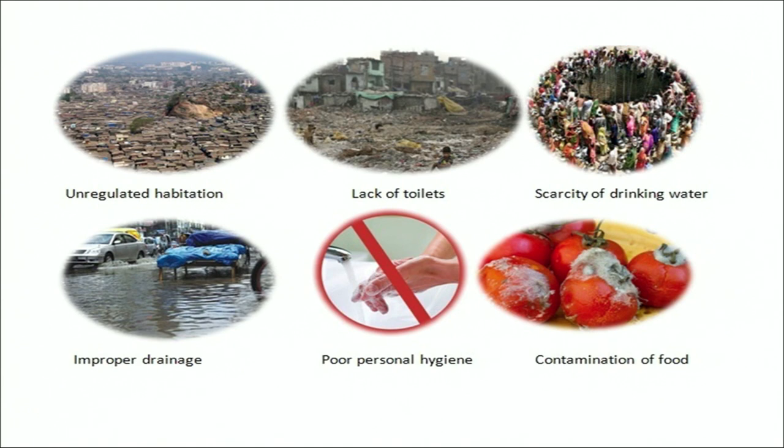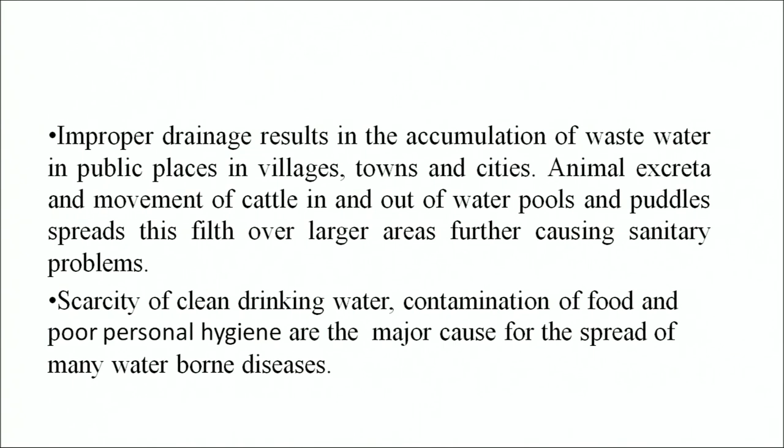As seen in the image, unplanned growth of habitation, lack of proper toilets especially in villages, towns and slum areas of cities does not permit proper disposal of human waste, which in turn leads to improper sanitary conditions and health hazards. Improper drainage results in the accumulation of waste water in public places. Animal excreta and movement of cattle in and out of water pools spreads contamination over larger areas, further causing sanitary problems. Scarcity of clean drinking water, contamination of food and poor personal hygiene are the major causes for the spread of many water-borne diseases. Let us now discuss the sanitation problems faced by the people of rural India.